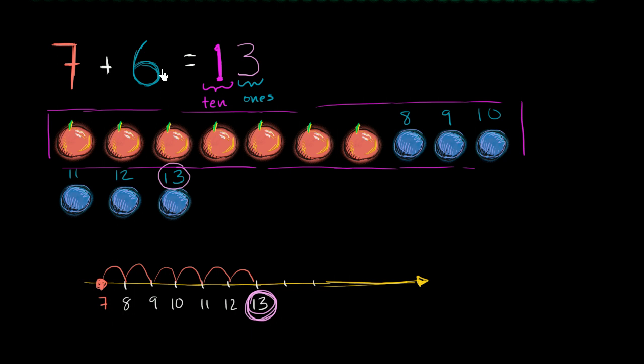So we're left, when you add seven plus six, you fill one whole group of 10. And then you have three ones left over. So this is the three ones right over here.